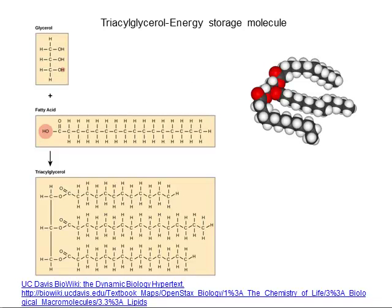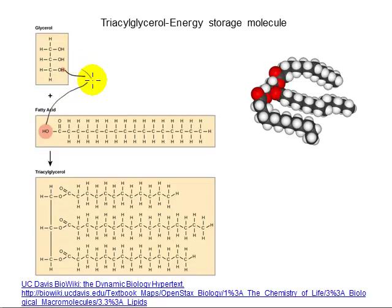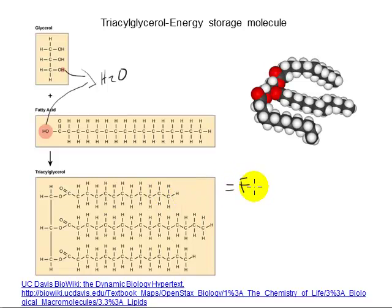Plants and animals store energy in the form of triacylglycerol. Structurally, these are composed of one glycerol and three individual fatty acids that are covalently linked to the glycerol via dehydration synthesis. Fatty acids are so named because structurally they consist of long hydrocarbon chains, which are non-polar — that's the fatty part — with a carboxyl group at the end of the chain, the acid part. When they're linked together, we get the triacylglycerol or triglyceride, which is synonymous with the terms fat and oil.